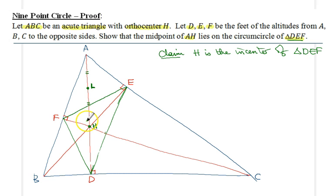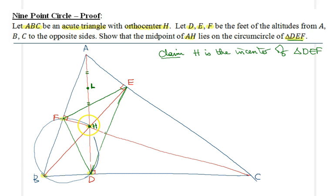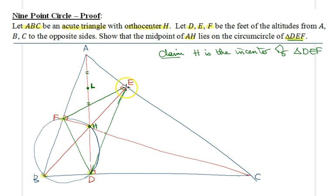Before starting the angle chase, let me remind you that we have some cyclic quadrilaterals. At least two will be useful. First, FHDB is a cyclic quadrilateral because these two opposite angles each measure 90 degrees. Similarly, quadrilateral HDCE is also cyclic because angles HDC and HEC are both 90 degrees, so they add up to 180 and are supplementary.